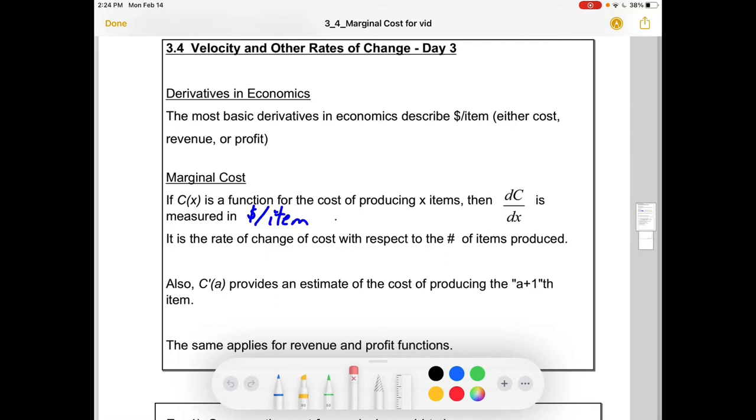So marginal cost boils down to this idea: if C of X is the cost for producing X items, they could be I love calculus t-shirts, then dC/dX is measured in, well, cost is going to be in dollars or whatever currency we're talking about, not to be too American slash Canadian centric here. And X is number of items. So the first derivative is going to be in dollars per item. It's the rate of change of cost with respect to the number of items produced.